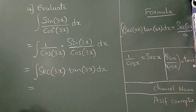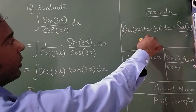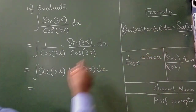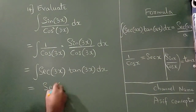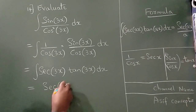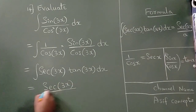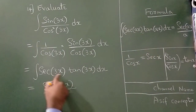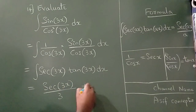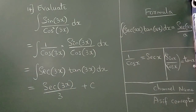Now I will apply the integration formula. The integral of sec(3x)·tan(3x) dx equals secant(3x) divided by 3, because the value of a is 3 here, plus C. So this completes your answer.